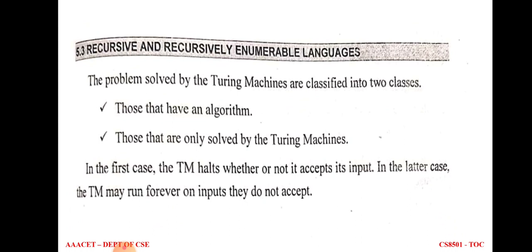Recursive and recursively enumerable languages: if a problem is solved by the Turing machine, it can be classified into two classes. First, the problem should have some algorithm — the Turing machine halts whether or not it accepts its input. Second, the Turing machine may run forever on inputs it does not accept. In short, problems can be divided into decidable and undecidable. For every decidable problem there is an algorithm that produces a solution of yes or no. For undecidable problems, we don't have any algorithm and cannot easily determine whether the solution is yes or no.